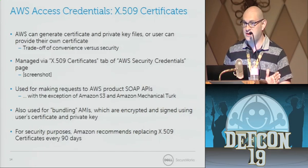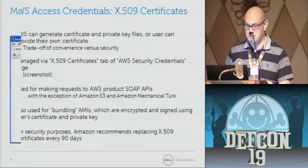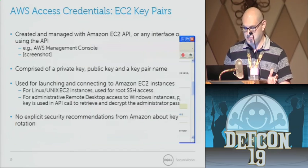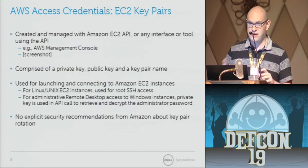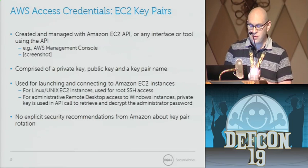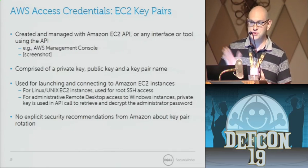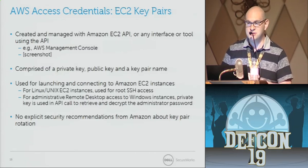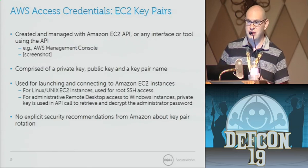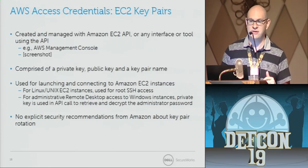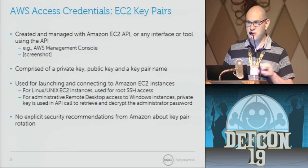Another important credential is X.509 certificates. Many parts of Amazon Web Services use a certificate and private key to access or to sign and bundle images. These are managed through the AWS console, but you can also use APIs. You can generate your own certificate or private key, or provide your own — this is a trade-off of convenience for security. It's recommended you generate your secret key yourself and provide it to Amazon. X.509 certs are used to bundle your AMIs and cryptographically sign and encrypt private AMIs, or just sign images you're making public. Amazon's recommendation is to rotate these every 90 days.